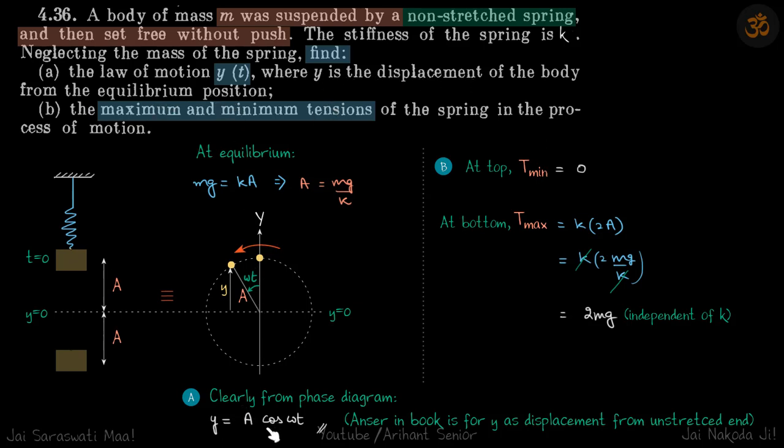Second part, find the maximum and minimum tension. So again, minimum tension is zero when the particle is here. Maximum tension is when the spring is stretched to its maximum. If this is a, maximum tension will be k into 2a. a is mg by k which gives 2mg, so it is independent of k.